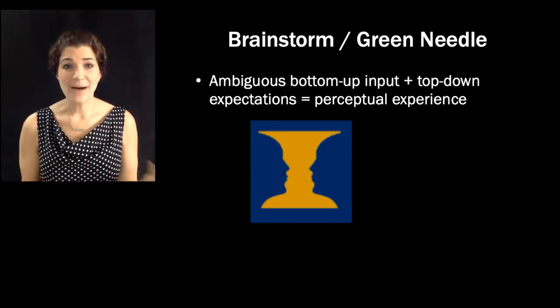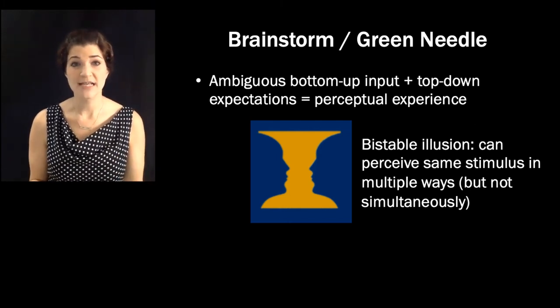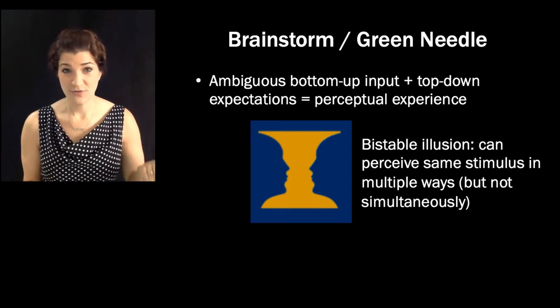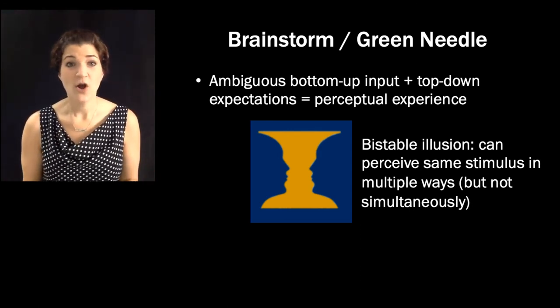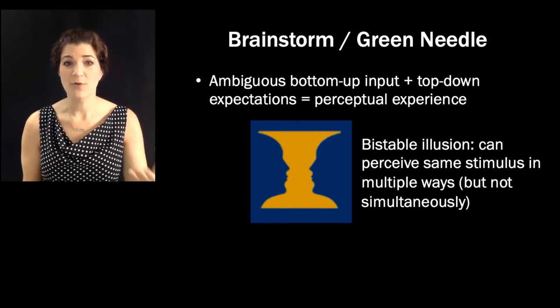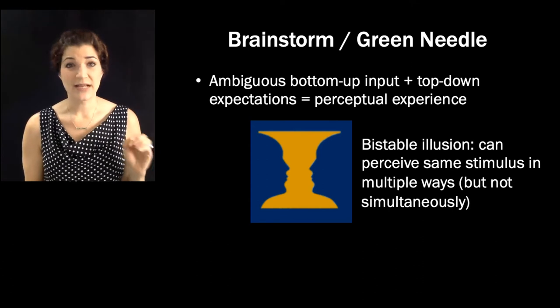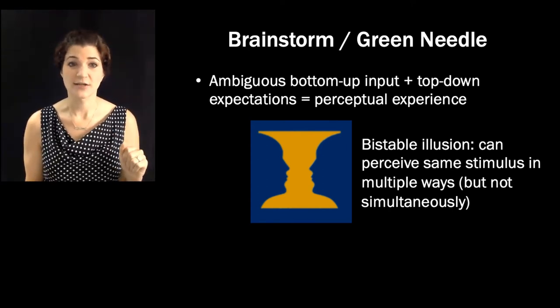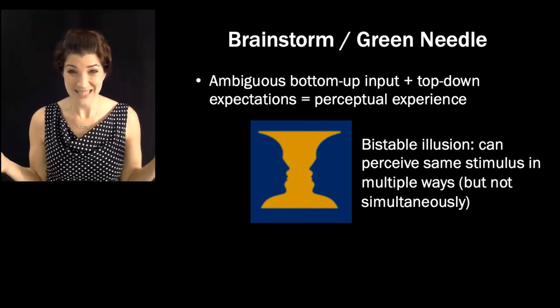This is a stimulus that we can perceive in multiple ways, depending on how we're focusing on it. So it's not unlike our logo for the class, the classic face vase, right? You can see two faces looking at each other, or you can see a vase, but you can't see both at the same time. Some illusions are truly bistable, as this one is, you can hear it both ways. And some are not. So we'll talk more about that in just a little bit. It's not the case that what you see is what you get. It's not the case that what you hear is what's actually there.